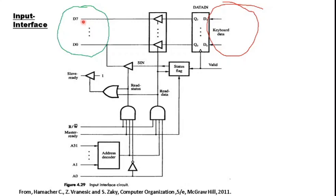SIN is multiplexed over D0, one of the data lines of the input interface facing the processor. That is another duty of this input interface: to supply SIN or the status information whenever the master demands. So the two main duties are: to supply information contained in data in to the processor, and to supply the status information to the processor.